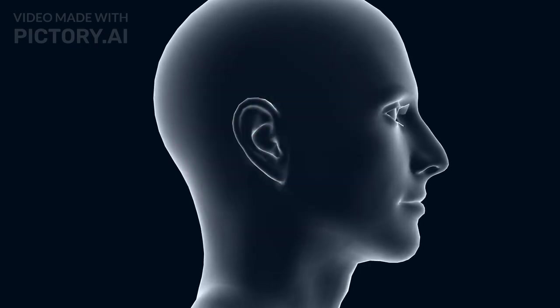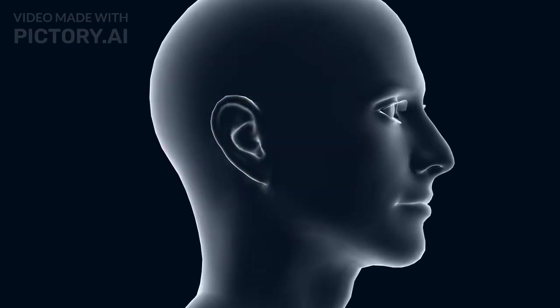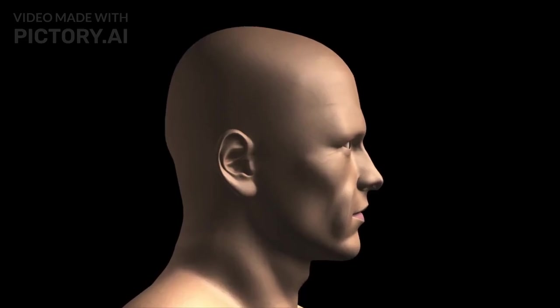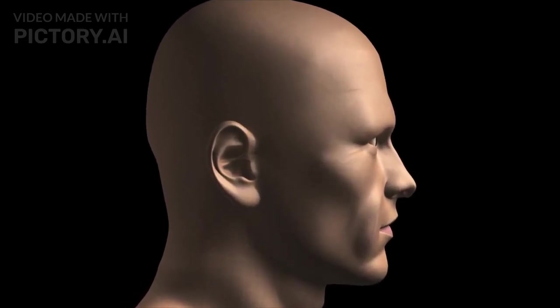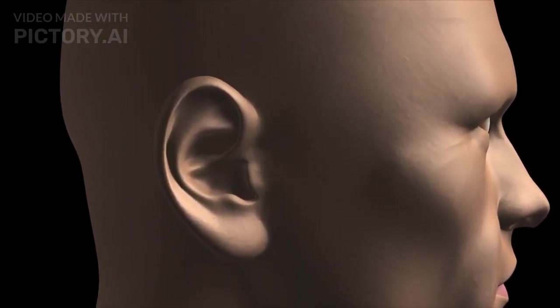The human ear is a complex organ responsible for detecting and analyzing sound waves and maintaining balance. It can be divided into three main regions: the outer ear, the middle ear, and the inner ear. Each part plays a vital role in the process of hearing.